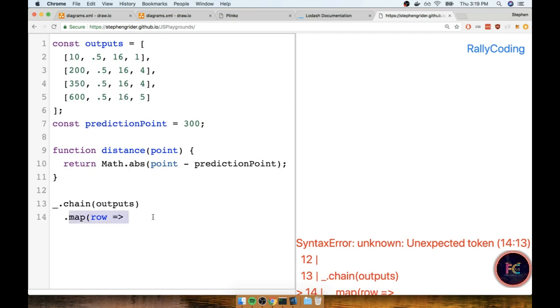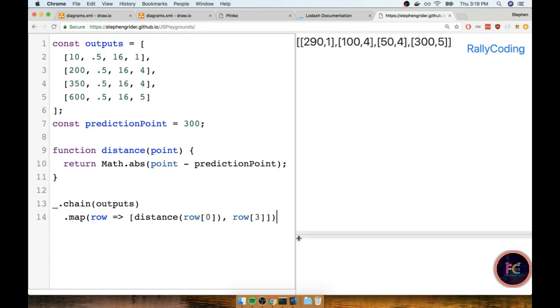Now the first stage of our map function - I'm going to return an array. The first element is going to be our distance function that takes our row at zero, and the second element will be our row at three. Now it looks like I made a little typo somewhere. Where did I do that? Oh, excuse me, right there. There we go.